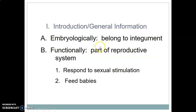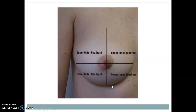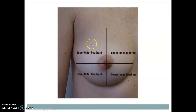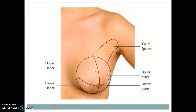The breast belongs to the integument system — it's an appendage of the skin. Functionally, it's part of the reproductive system because it responds to sexual stimulation and helps in the feeding of the young ones. It's divided into four quadrants: upper inner, lower inner quadrant, upper outer, and lower outer quadrant. Usually there is what we call the tail part of the breast tissue extending towards the axilla.